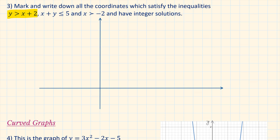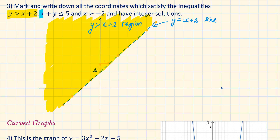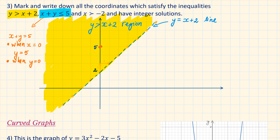For y is larger than x plus 2, the y-intercept is 2, so it crosses the y-axis at 2. The gradient is 1, so we go 1 up and 1 across starting from the plotted point. We draw the line y equals x plus 2. The symbol y larger than tells us we shade above the line. To represent x plus y less than or equal to 5, we plot the line x plus y equals 5 using intercepts: when x equals 0, y equals 5, and when y equals 0, x equals 5. We draw a solid line because the 5 is included.